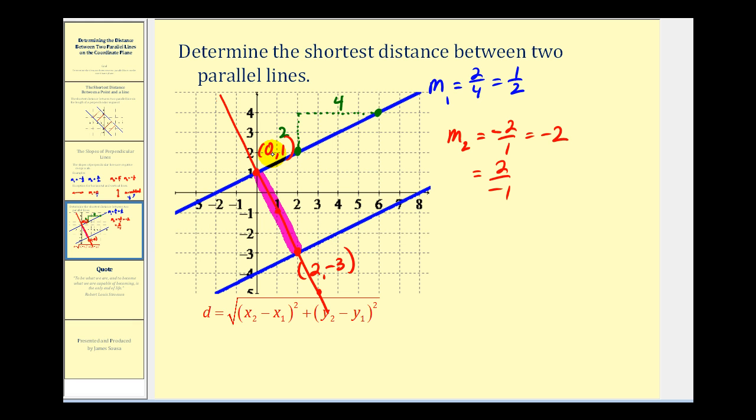So we want to determine the distance between zero, one, and two, negative three. So again, we'll call these the ones, these the twos. And now we'll use the distance formula to determine the distance between the two parallel lines.